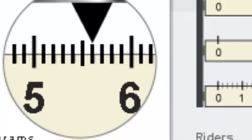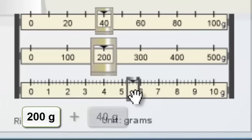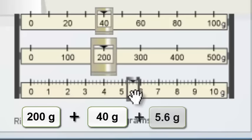Now all you have to do next is add them up. You take the 200 grams and you add the 40 grams that you position the riders at. So that gives you a total of 240, and then you take a look at the ones gram that you moved, which is 5.6. All you do is then add 240 plus 5.6, and that'll give you a total mass of 245.6 grams, and that's how much mass this light bulb has.